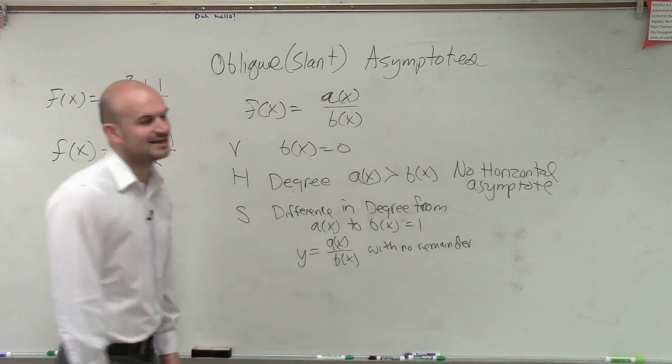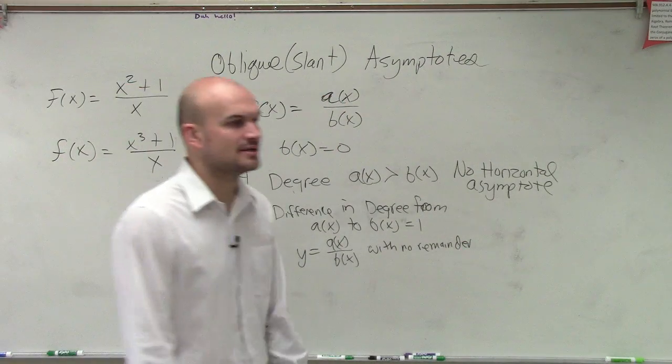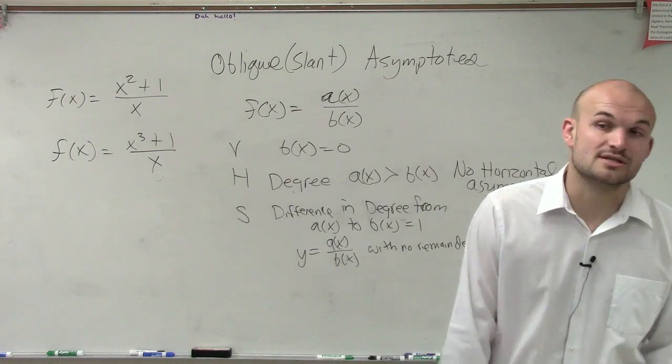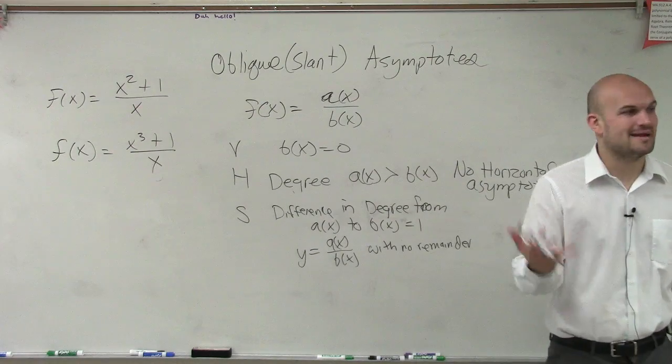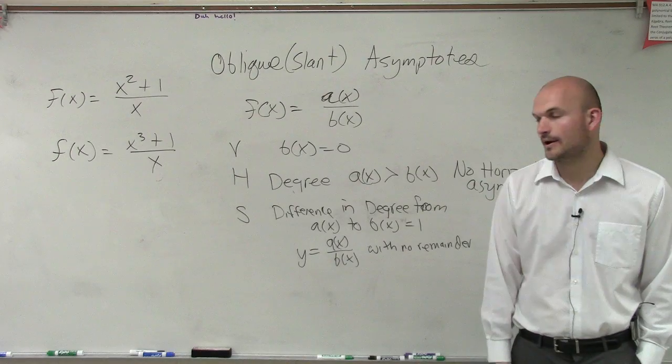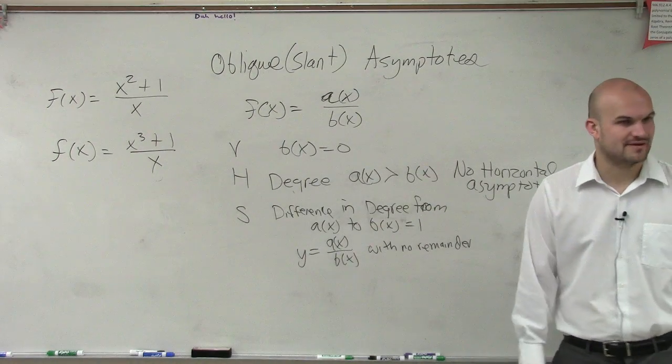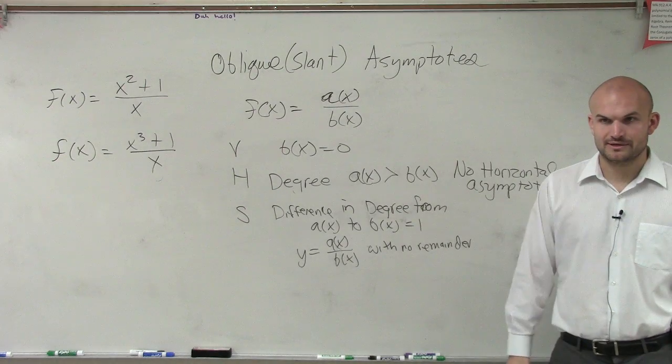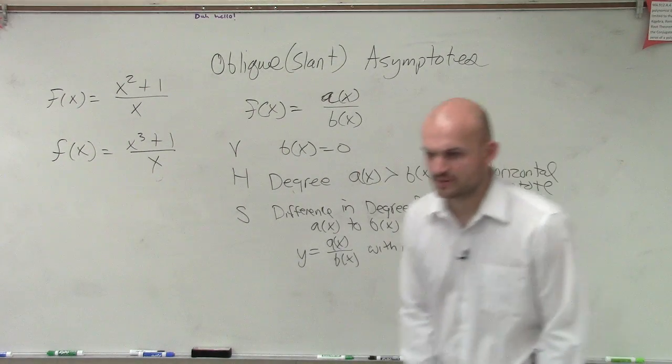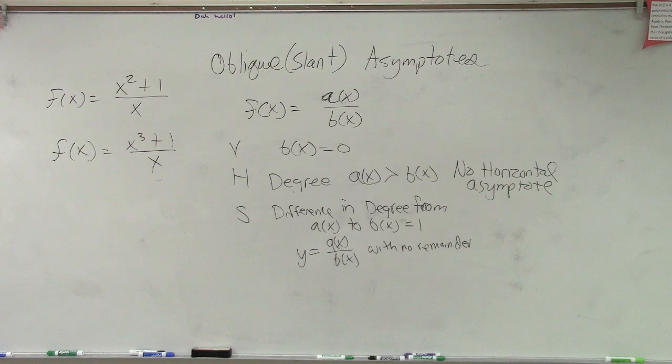You guys are going to want to write that in, because when you guys give me the quotient, sometimes you're going to get a remainder. The remainder is not going to be a part of the asymptote. So it's just y equals a of x divided by b of x, without dealing with the remainder. So let's go through an example.